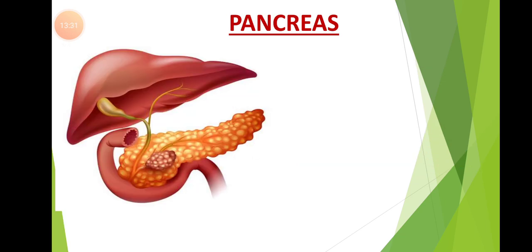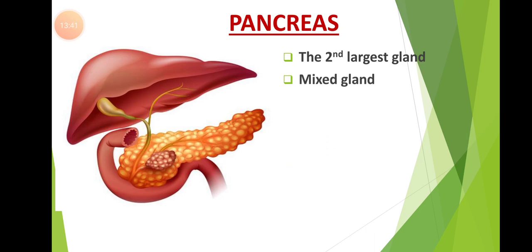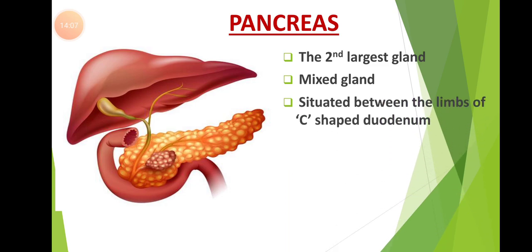Coming to the next gland — the pancreas. The pancreas is the second largest gland in our body and is also called a mixed gland, because it secretes both enzymes and hormones. It acts as both an exocrine gland and an endocrine gland. The exocrine part secretes enzymes and the endocrine part secretes hormones. It is situated between the limbs of the C-shaped duodenum.